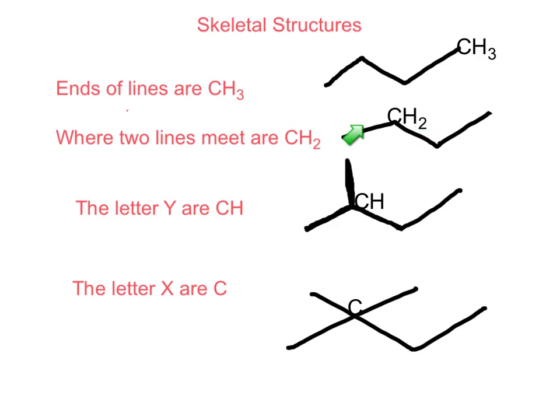where two lines meet, we have two hydrogens bonded to this carbon. So there is a carbon here, but I'm not showing that. Where three lines meet, there is a CH group.